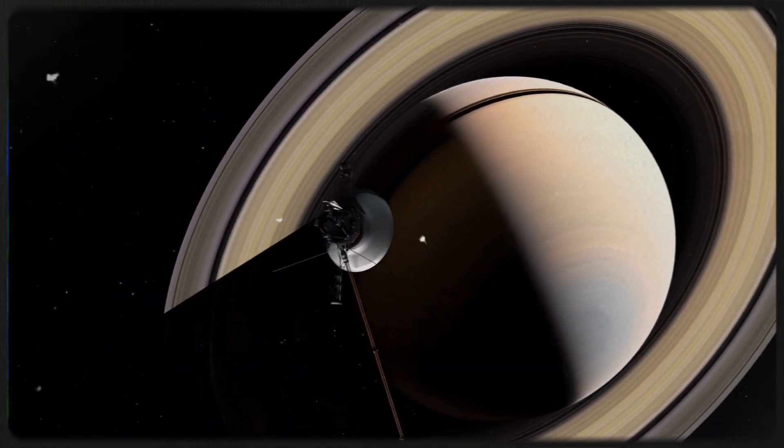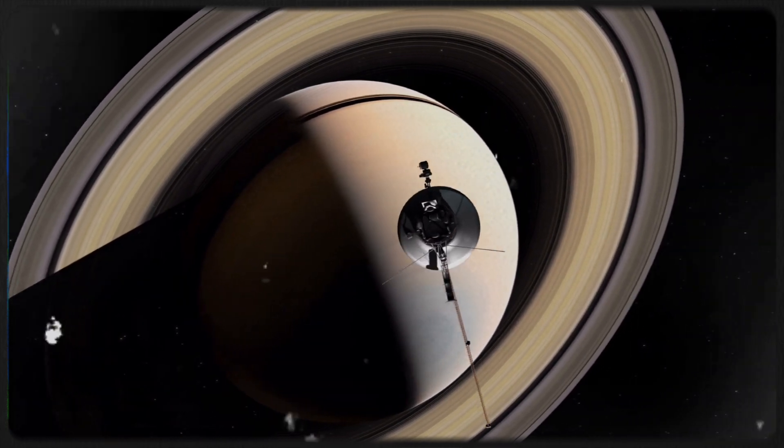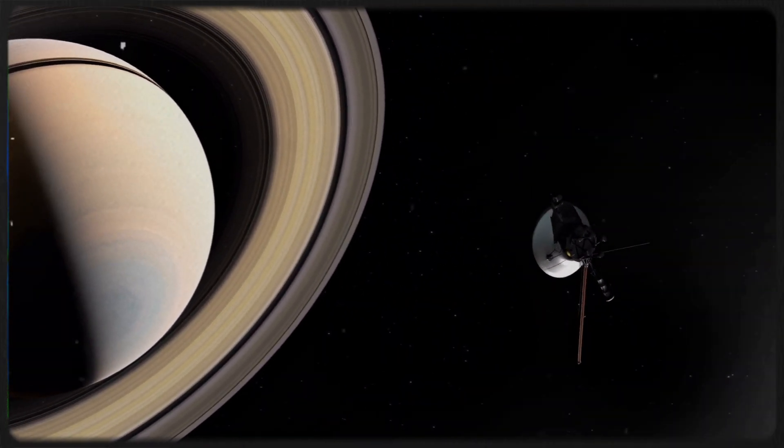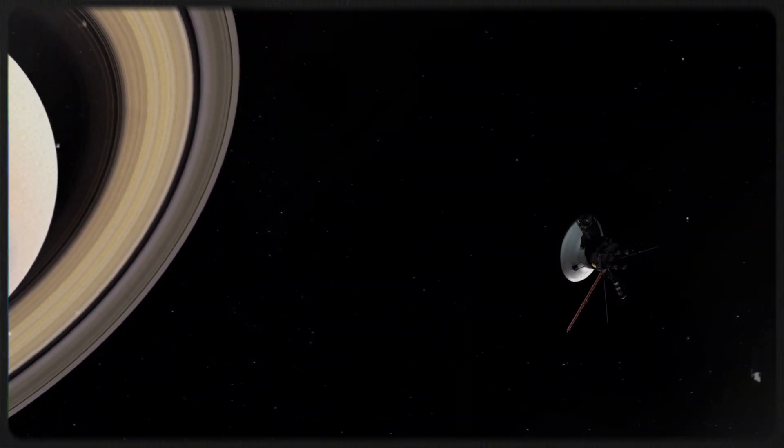This alignment allowed a spacecraft to gain speed from the gravitational pull of each giant planet it passed, like being propelled by an invisible rope that then snapped, flinging the probe on its journey. The catch? This alignment only happens once every 176 years.